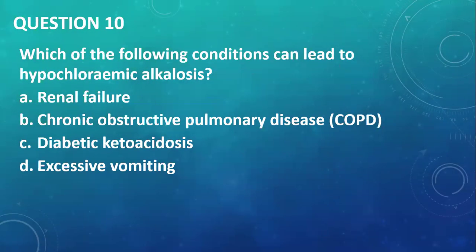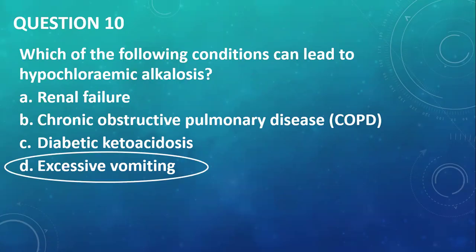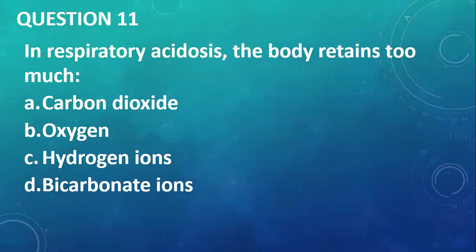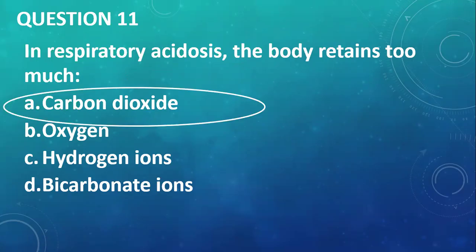Question number ten: which of the following conditions can lead to hypokalemic alkalosis? In vomiting, you lose a lot of acids as well as chloride, so you will have alkalosis and low chloride levels. Excessive vomiting is your answer. Question number eleven: in respiratory acidosis, the body retains too much — carbon dioxide, oxygen, hydrogen ions, or bicarbonate ions? Your answer is carbon dioxide, because respiratory acidosis is caused by situations that do not allow a person to ventilate, leading to accumulation of carbon dioxide and acids.